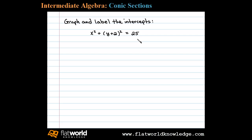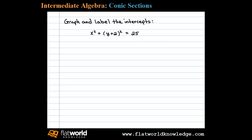Recall that the standard form for the equation of a circle looks like the quantity x minus h squared plus the quantity y minus k squared equals r squared. If we can write the circle in this form, then we can see the center is h comma k.